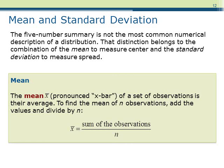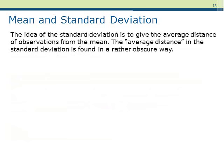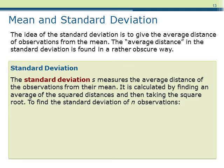Another way of describing the center and spread of a dataset is with the mean and standard deviation. The mean, x-bar, of a set of observations is their average. To find the mean of n observations, add the values and then divide by n. The mean is a quantity that measures the center of a dataset. The standard deviation gives us a sense of the spread of a dataset — intuitively, it tells us how far, on average, an observation is away from the mean.